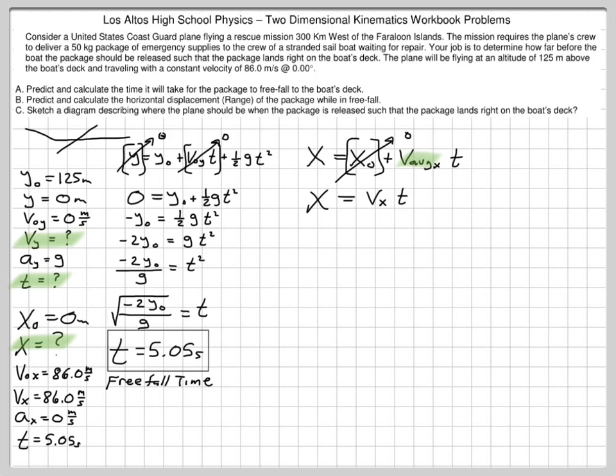Using 86 meters per second and 5.05 seconds, I can calculate the final range of the package to be somewhere around 434 meters. So when I drop the package out of the airplane, it travels downward and rightward for 5.05 seconds, and it travels horizontally 434 meters, while it traveled vertically downward 125 meters. So, the horizontal displacement is referred to as the range.